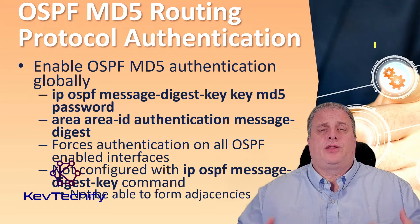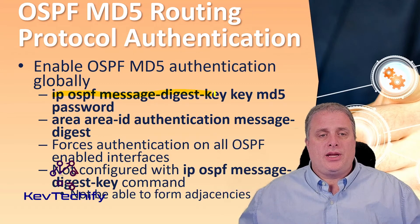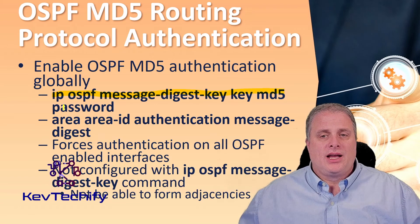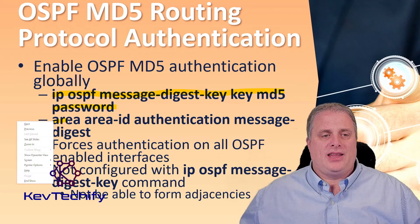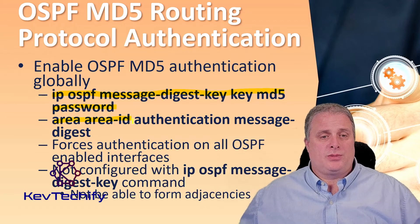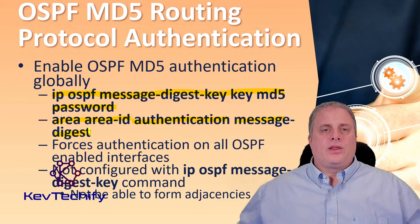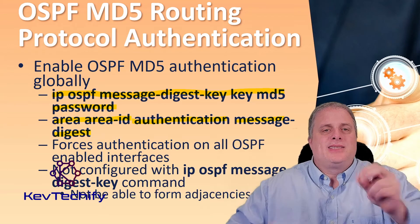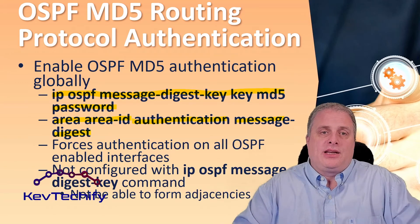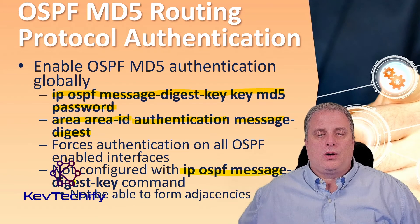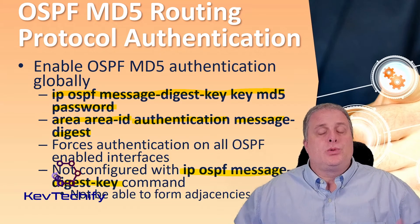To enable OSPF MD5 authentication globally, you have to use a couple of commands. The first command is IP OSPF message digest key, where you specify the key and the MD5 password. The second is specifying the area with its area ID, then authentication and the message digest. This method forces authentication on all OSPF-enabled interfaces. If an interface is not configured with the IP OSPF message digest key command, it will not be able to form adjacencies with other OSPF neighbors.